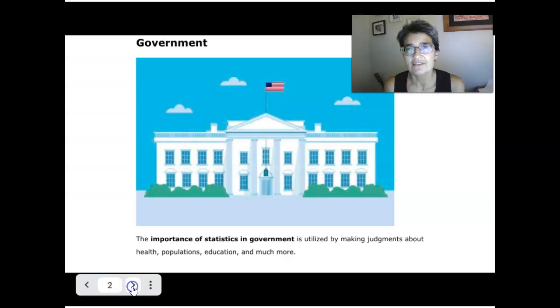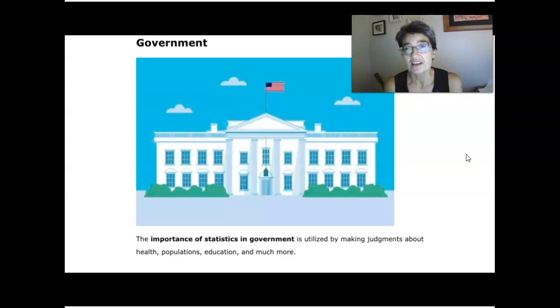The government uses lots of numbers and statistics to make some very important judgments about health, population, education, and much more. In particular, how to allocate the money that it gets from taxes.